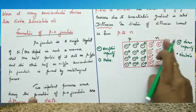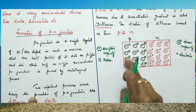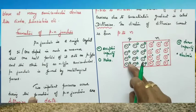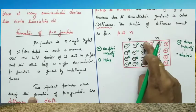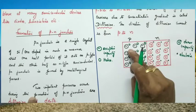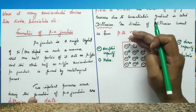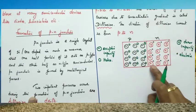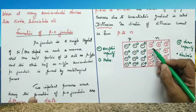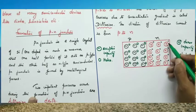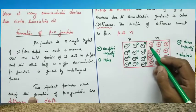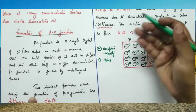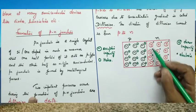In a P type semiconductor, the minus signs represent the acceptor impurity and the circles represent the holes. The acceptor impurity gets negative charge because it gives one hole for conduction. In an N type semiconductor, the dots represent electrons and the plus signs represent the donor impurity, because it gives one electron for conduction and therefore the impurity gets a positive charge.